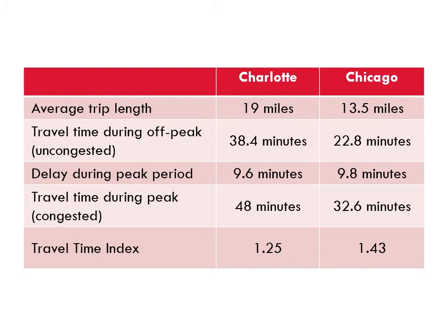This is a hypothetical situation, but what about a real pair of cities? This table provides the same information for Charlotte and Chicago. While the amount of delay is nearly identical in the two cities, they have very different free flow travel conditions. Drivers in Charlotte travel 19 miles per trip and spend 38 minutes driving during free flow. Drivers in Chicago have much shorter distances and spend just 23 minutes in free flow. When we calculate the TTI, congestion appears much worse in Chicago — but I would rather spend 33 minutes getting to my destination than 48.